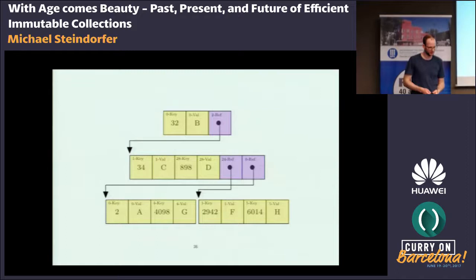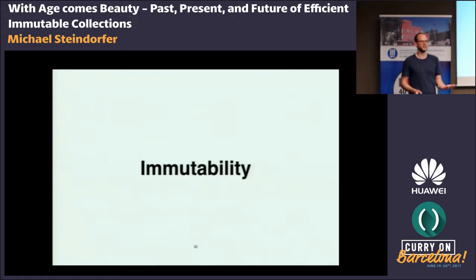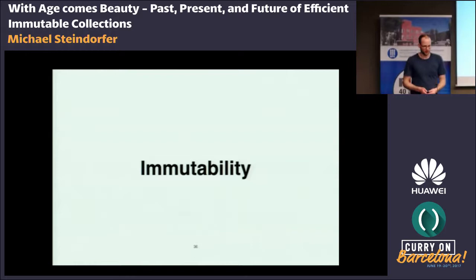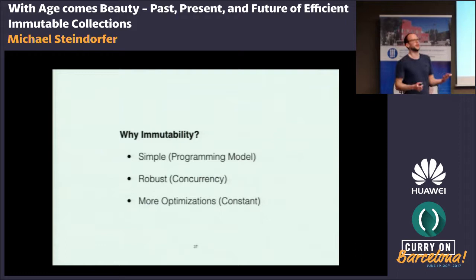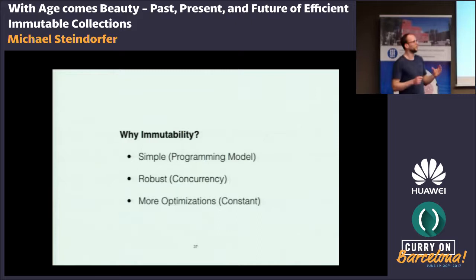So far I haven't talked about immutability — I just said these data structures are the state of the art for immutable collections. Essentially, Trie data structures can be used for all kinds of data structures: concurrent, mutable, and immutable. The only difference is when and how much you copy. Why would you care about immutability? Immutability gives you a simpler mental programming model, lets you worry less about concurrency because you can't corrupt state from other threads, and you can apply several optimizations based on the constantness of your data.